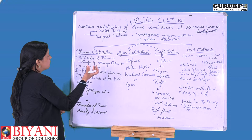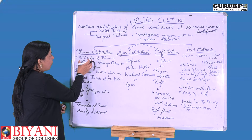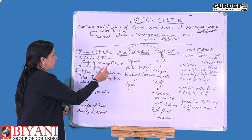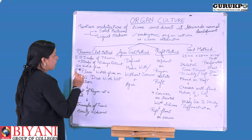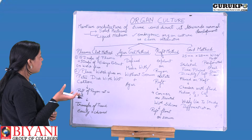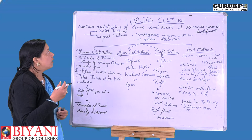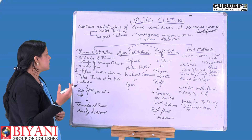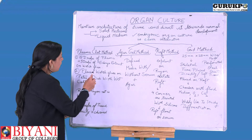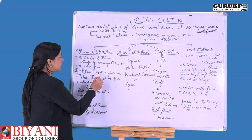In the plasma clot method, we create a plasma clot by adding 15 drops of plasma to 5 drops of embryo extract on a watch glass. This plasma clot acts as a medium and provides the environment for growth and differentiation of cells and tissues so that they may form an organ.